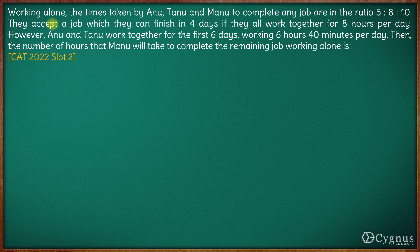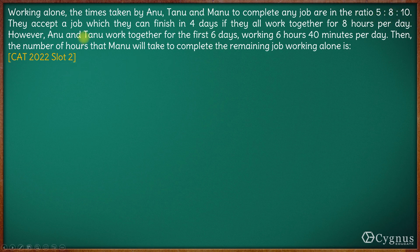In this question, we are given that working alone, the times taken by Anu, Manu, and Tanu to complete any job is in the ratio of 5:8:10. This is the ratio of their time taken.